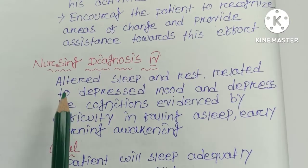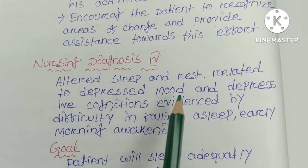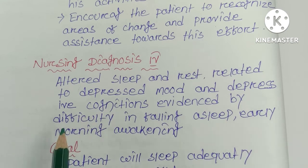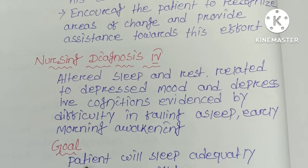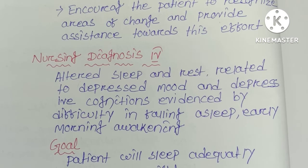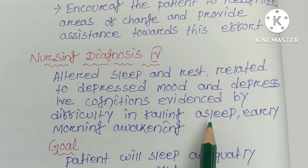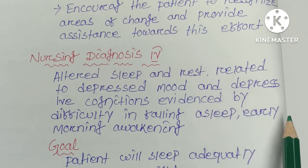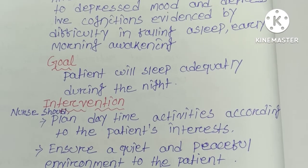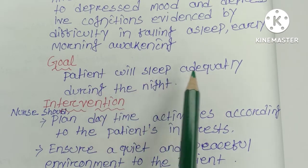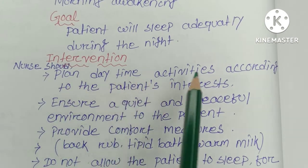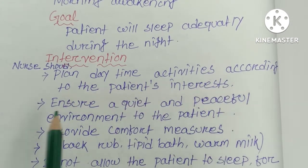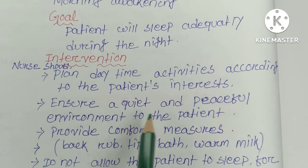Nursing Diagnosis 4 is altered sleep and rest related to depressed mood and depressive cognition, evidenced by difficulty in falling asleep and early morning awakening. The goal is that the patient will sleep adequately during the night. Interventions include: the nurse should plan daytime activities according to the patient's interests and ensure a quiet and peaceful environment for the patient.